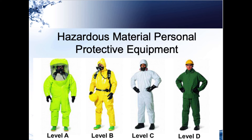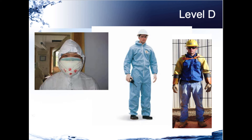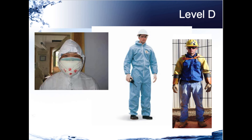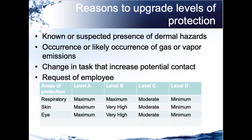Level D is what you see with many workers out there — construction workers are in level D. This gentleman is wearing something to protect from dust, and it may be considered level D if you did not need a fit test to wear the respirator. Level D is primarily a work uniform used to protect against nuisance contaminants, dust, and dirt. It offers no respiratory protection and minimum protection against skin contaminants. We try to downgrade as much as possible — from A to B, B to C, C to D — because it's easier on workers and means we're reducing risk.